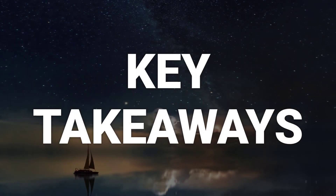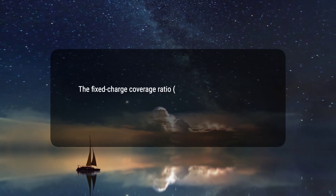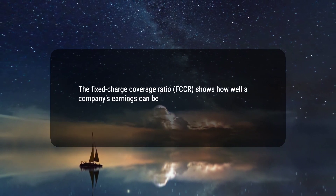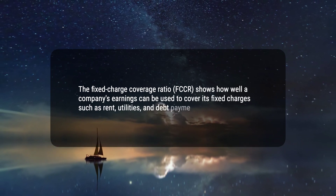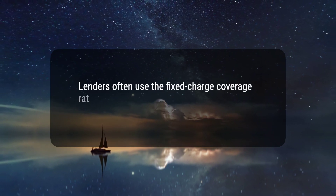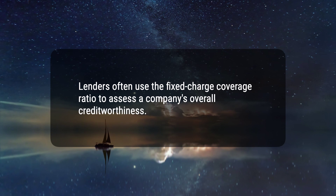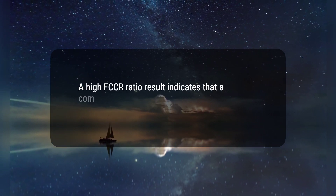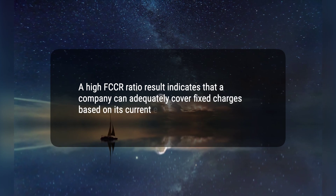Here are three key takeaways. 1. The Fixed Charge Coverage Ratio, FCCR, shows how well a company's earnings can be used to cover its fixed charges such as rent, utilities, and debt payments. 2. Lenders often use the Fixed Charge Coverage Ratio to assess a company's overall creditworthiness. 3. A high FCCR result indicates that a company can adequately cover fixed charges based on its current earnings alone.